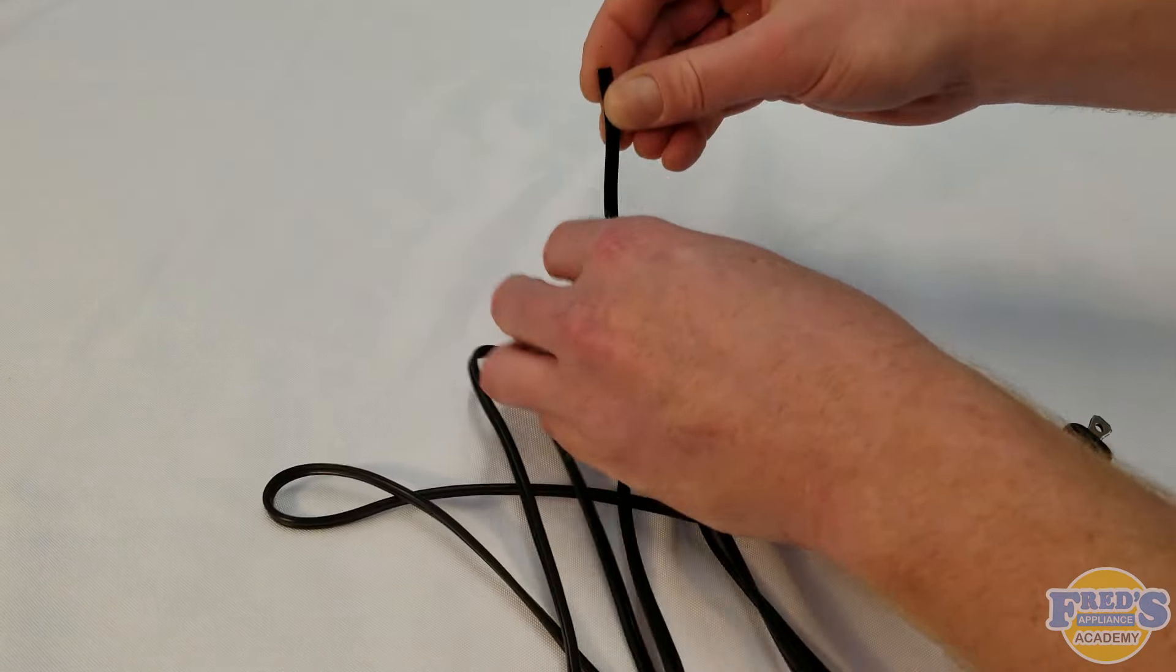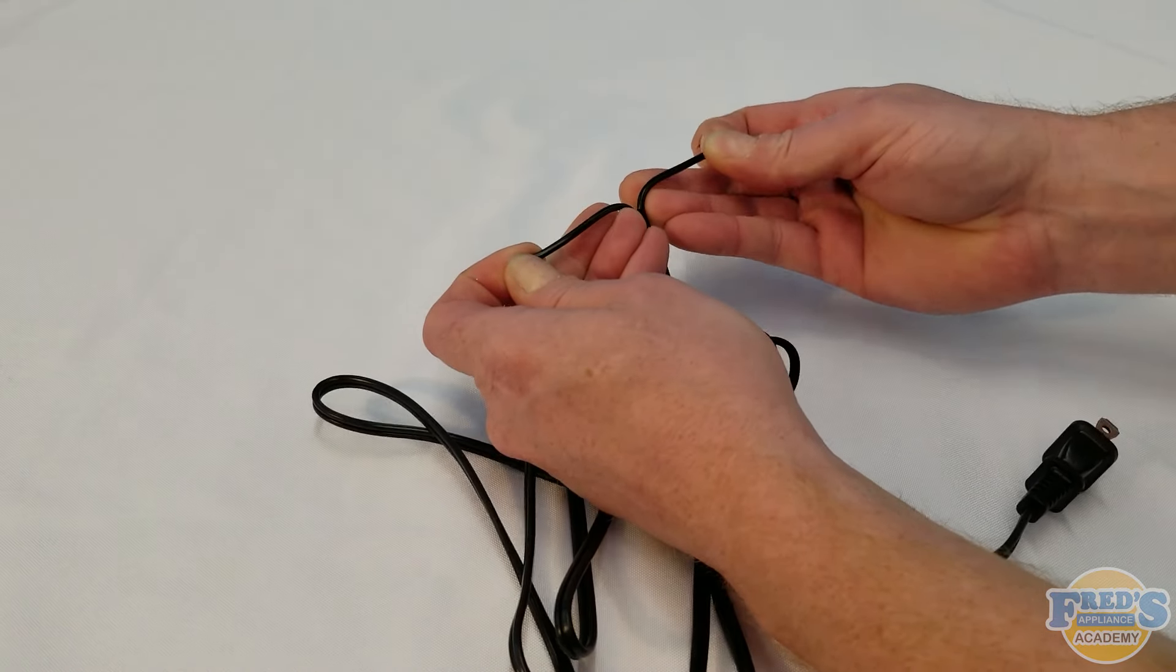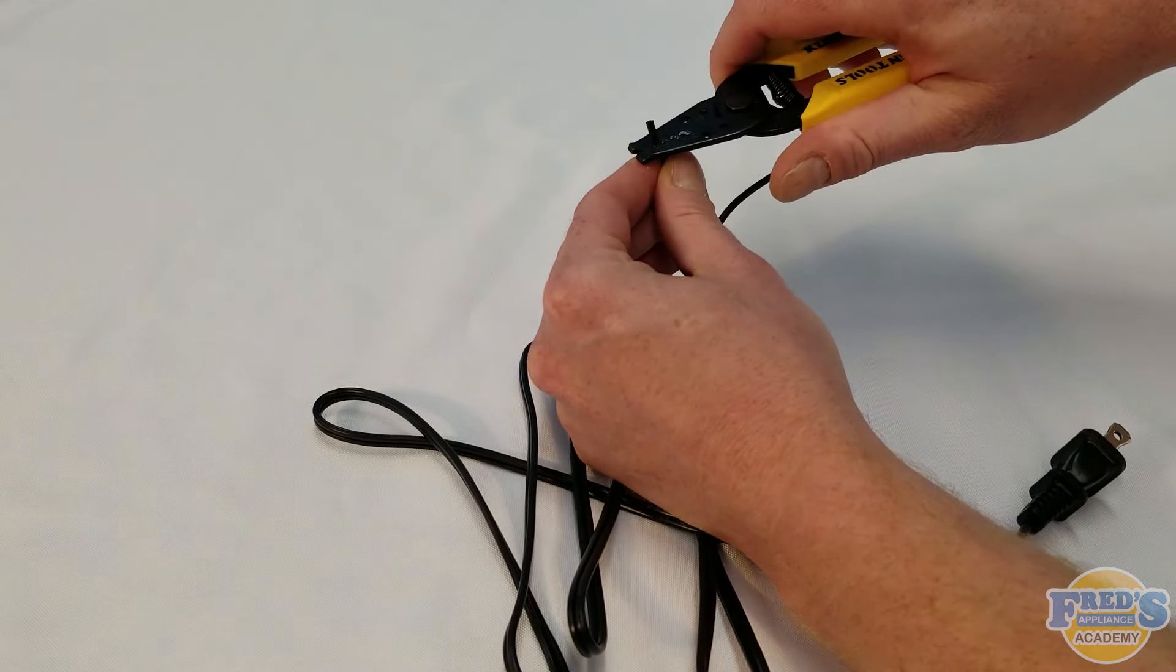Basically we're simulating that it had a receptacle on one end. We're going to cut that off and then peel apart the hot and neutral. Next we're going to strip away around one quarter inch of the insulation.